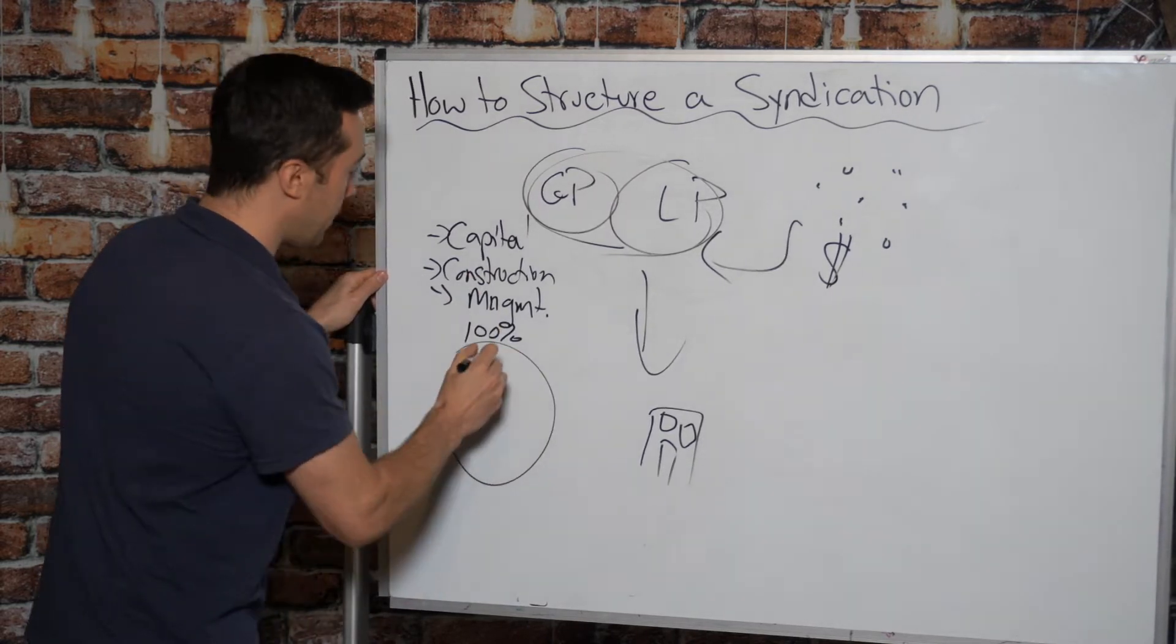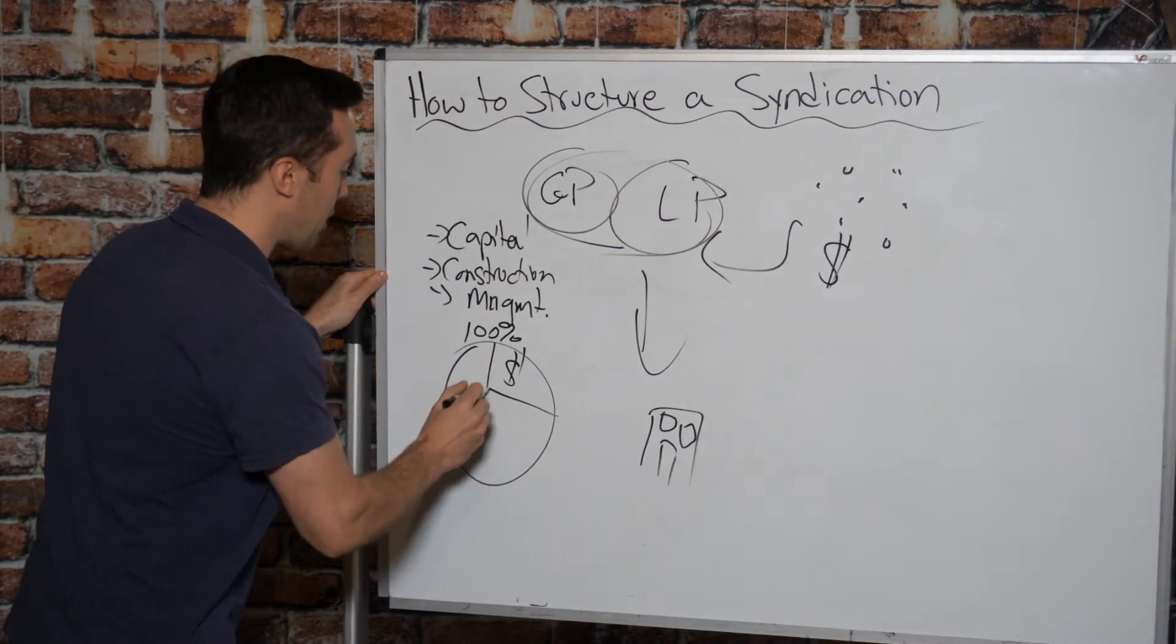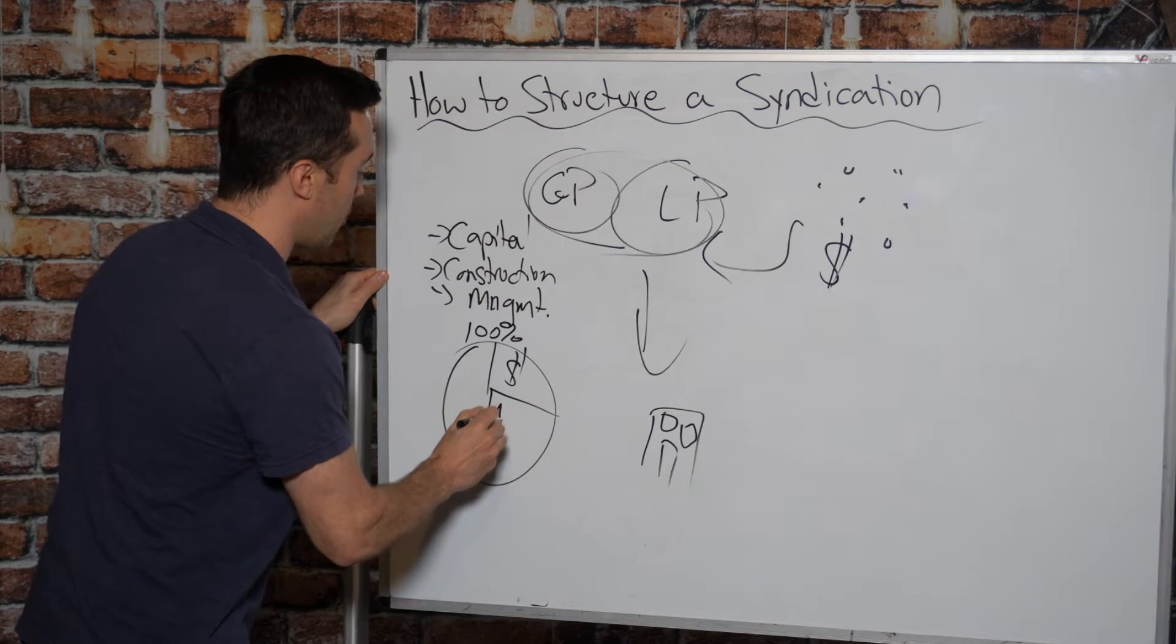So let's say this is 100% of the general partnership. You may decide that a quarter of the GP is allocated to capital. Maybe a quarter is allocated to management.